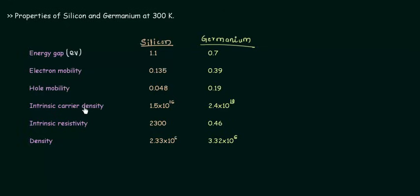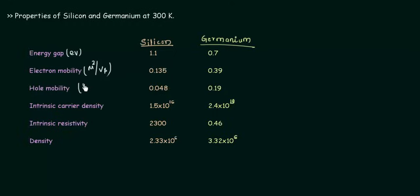This is in electron volts. Electron mobility and hole mobility are very important concepts in semiconductor physics that we will discuss in the next presentation, but right now you need to write down the values for silicon and germanium. The electron mobility is measured in meter square per volt second and also the hole mobility is measured in meter square per volt second.